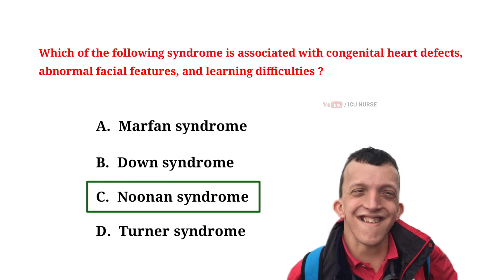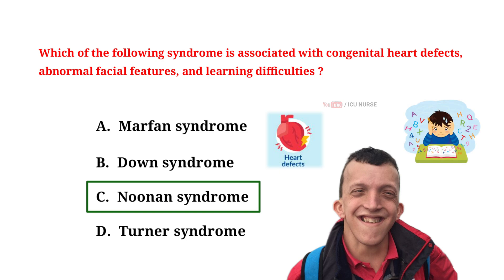Noonan syndrome is a genetic condition that can cause a variety of symptoms. It often leads to heart defects, distinct facial features, and difficulties with learning. People with this syndrome might also be shorter than average and have issues with bleeding. It results from changes in specific genes.